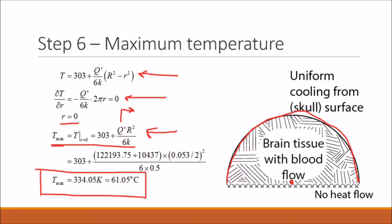So if the blood flow rate increases, then ultimately Q prime will increase. And this in turn will cause an increase in the maximum temperature.